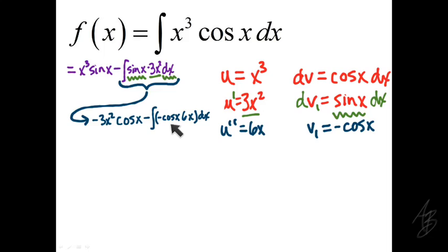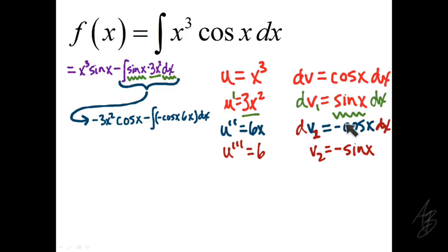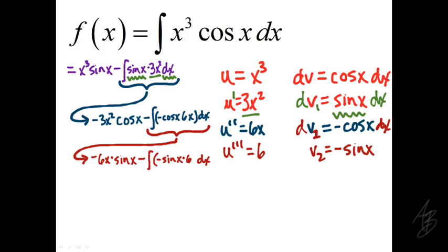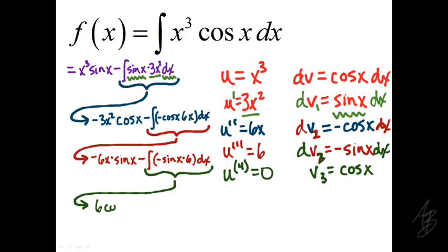We still need integration by parts for that remaining integral. Our new u is 6x, which differentiates to 6, and our new dv is negative cosine of x, which integrates to negative sine of x. Evaluating that integral gives 6x times negative sine of x minus the integral of negative sine of x times 6 dx. Then, differentiating 6 gives 0, and integrating negative sine of x gives cosine of x.